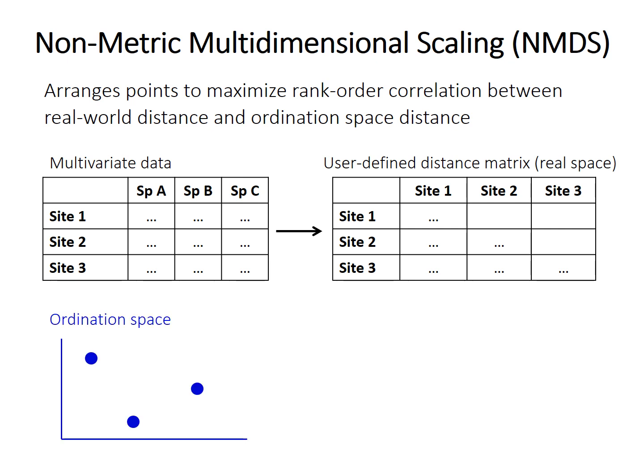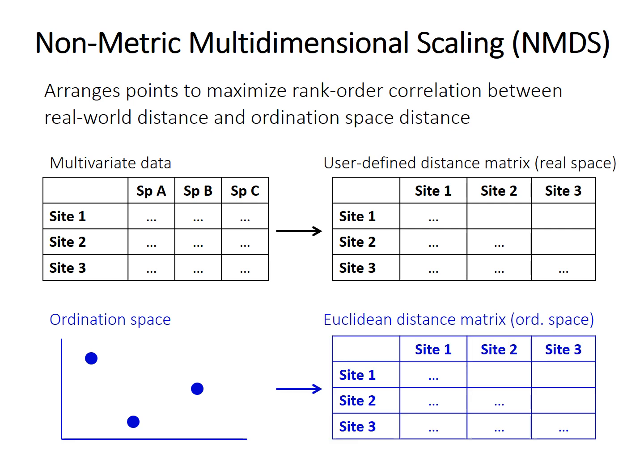Next, the computer places the samples or sites in ordination space — say in two dimensions, or three dimensions, or whatever. Then it calculates the Euclidean distance between all the samples in that reduced ordination space to get a second distance matrix. So the first distance matrix is in the real full-dimensional space using the distance measure you chose, and the second is in the reduced ordination space using Euclidean distance.